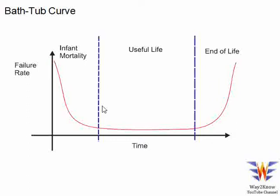In the electronics world, the reliability of a particular product can be represented in the form of a curve where there are three phases associated with it. Before going to the curve, let us talk about reliability. Reliability is basically, in simple terms, how much time a specific product can work without any failures over a period of time. The longer the operation without failures, the more reliable it is.